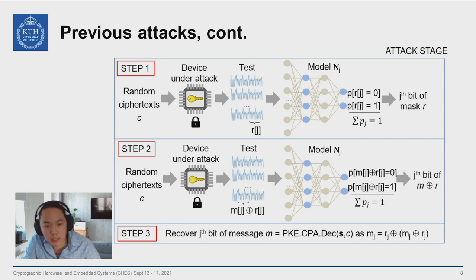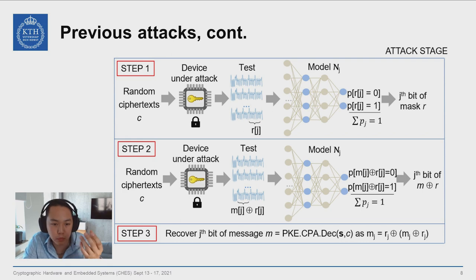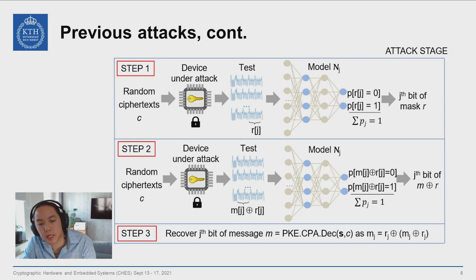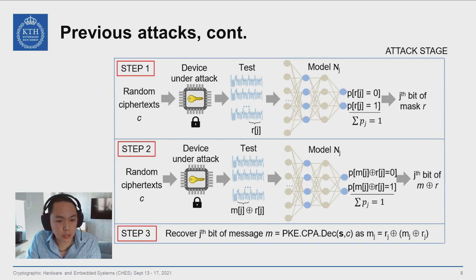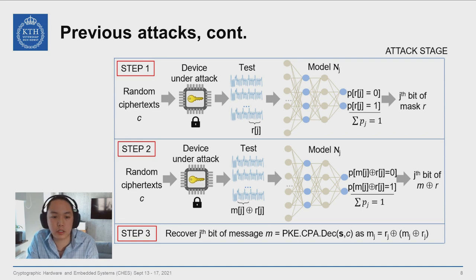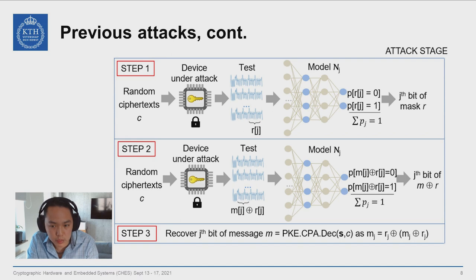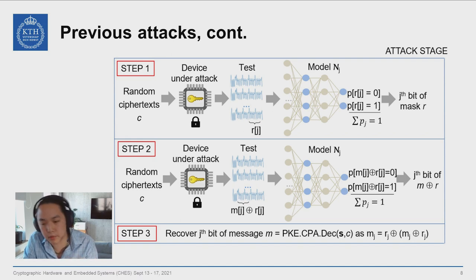In previous attacks, you would have to perform the attack stage in three steps: first, recovery of the mask; second, retrieving the second share, which is the mask plus secret; and finally, uncovering the secret by combining both shares. This is in contrast with our approach, for which we just show all the shares at once, and the neural network outputs what it thinks the bit is going to be. Simple.